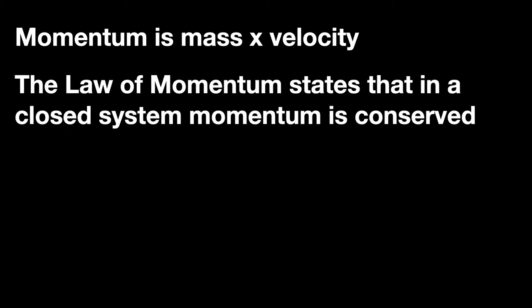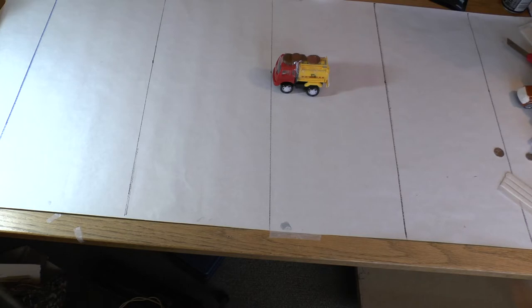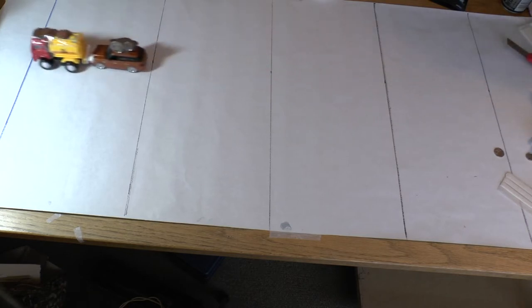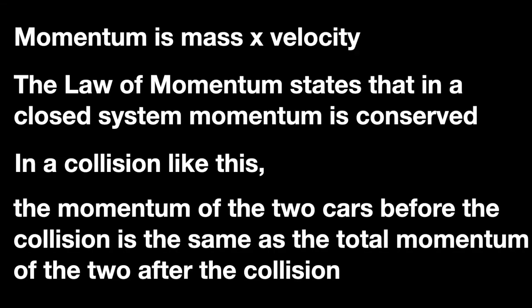The law of momentum states that in a closed system momentum is conserved. So for example in a collision like this, the momentum of the two cars before the collision is exactly the same as the momentum of the two cars after.